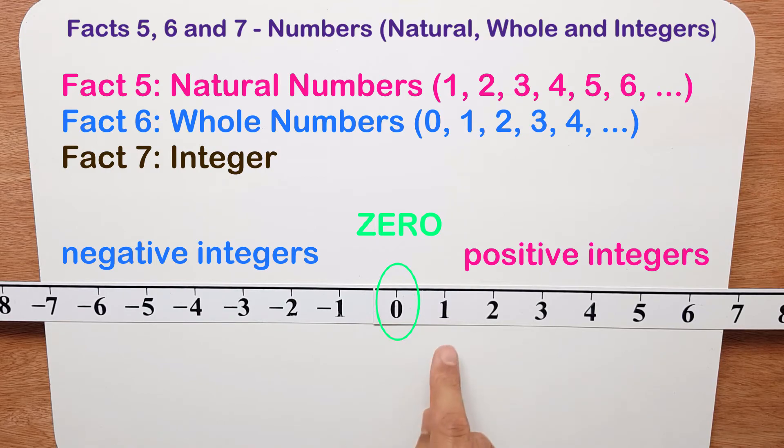So all the positive integers are 1, 2, 3, 4, 5 and so on.